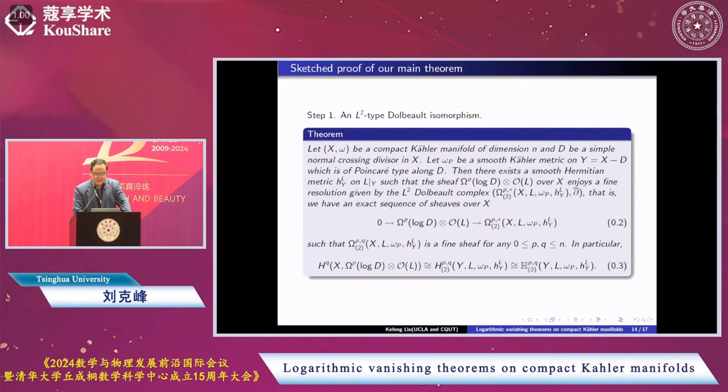Then there exists a smooth hermitian metric on L restricted to Y such that omega^p(log D) tensor O(L) over X has a fine resolution given by the L2 double complex. This L2 double complex is given by this sheaf, and it's a d-bar complex. That means this differential form with the induced metric is L2, and its d-bar is also L2.